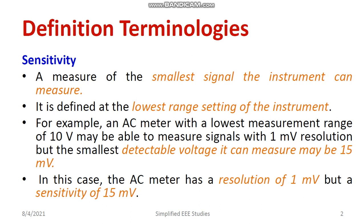For one more example, consider an AC ammeter with a range of 0 to 5 ampere. The maximum current it can measure is up to 5 ampere. If 2 milliampere is the smallest quantity you can measure using that instrument, then 2 milliampere is said to be the sensitivity. Resolution is another terminology that I will be discussing afterwards.